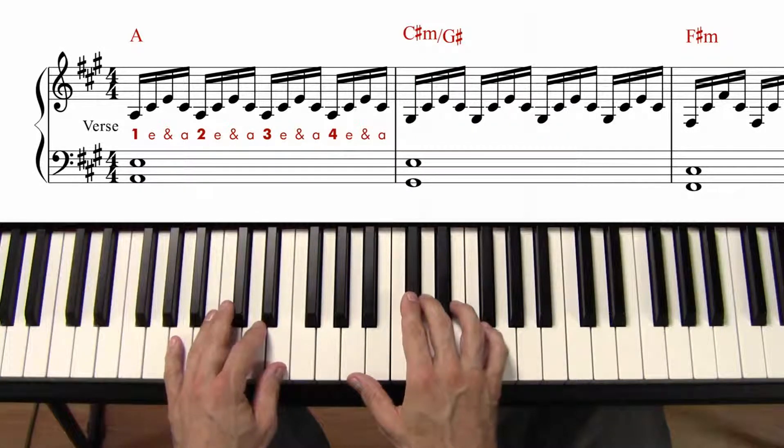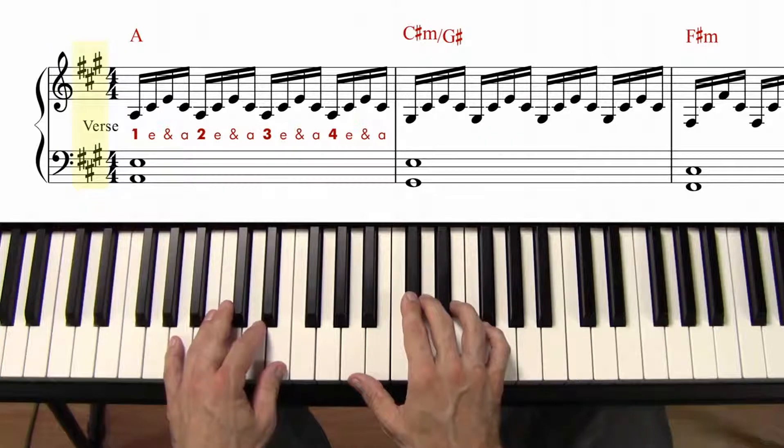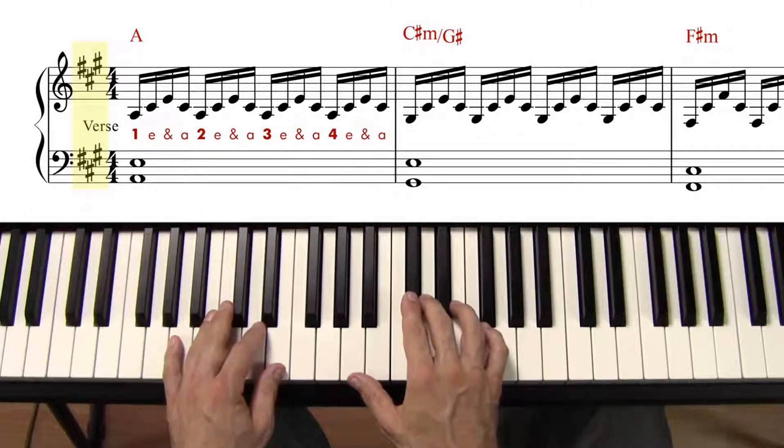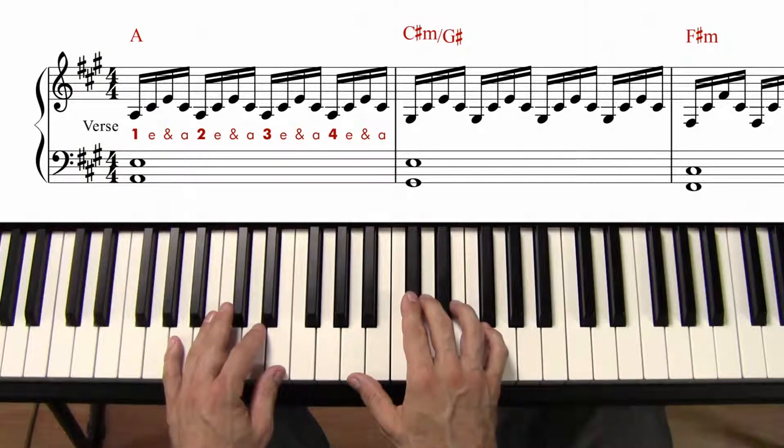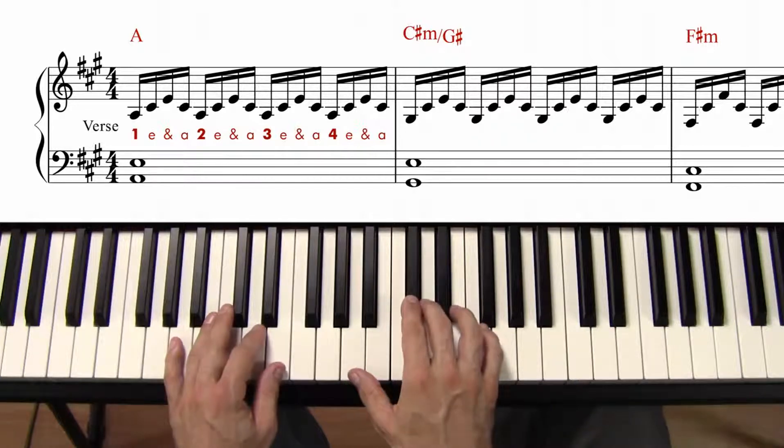Keep in mind, we are in A major. That means there are three sharps in the key signature. So every F, C, and G that you see is automatically going to be sharped because that's the key that we're in. And let's try it one more time without the metronome. Let's play it together.